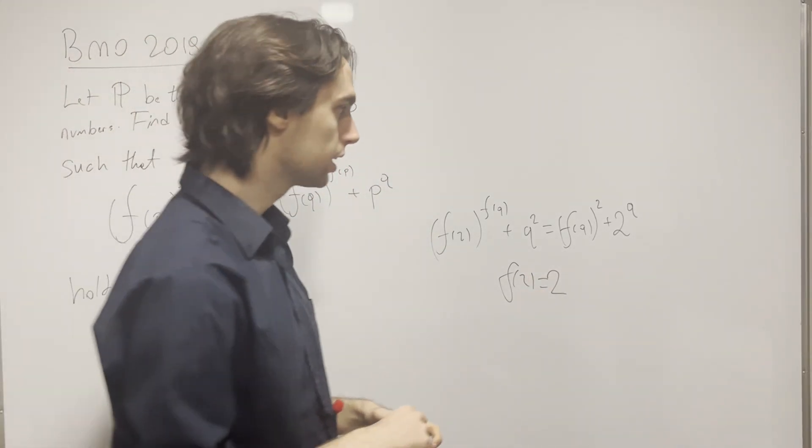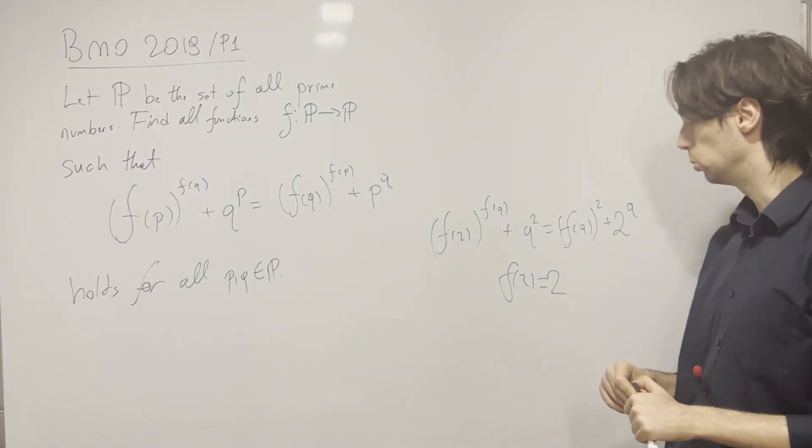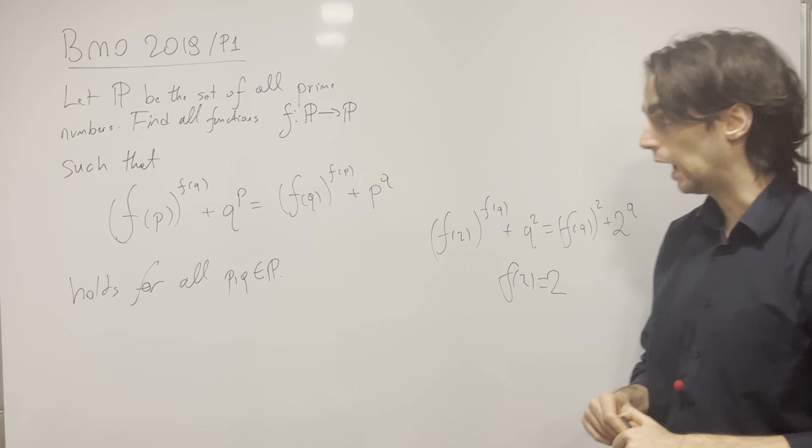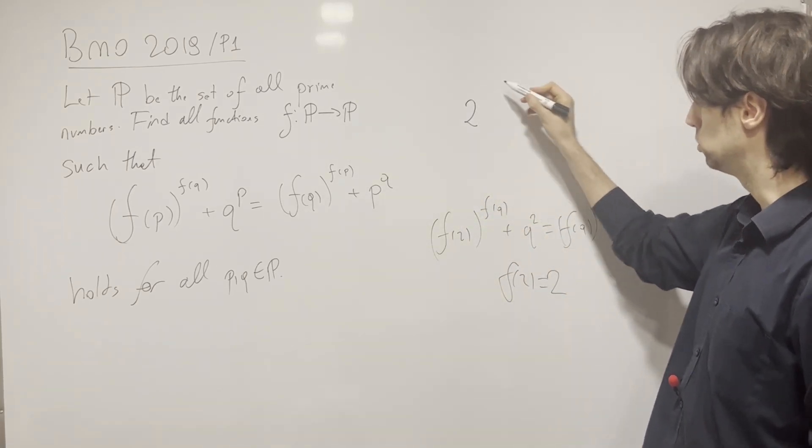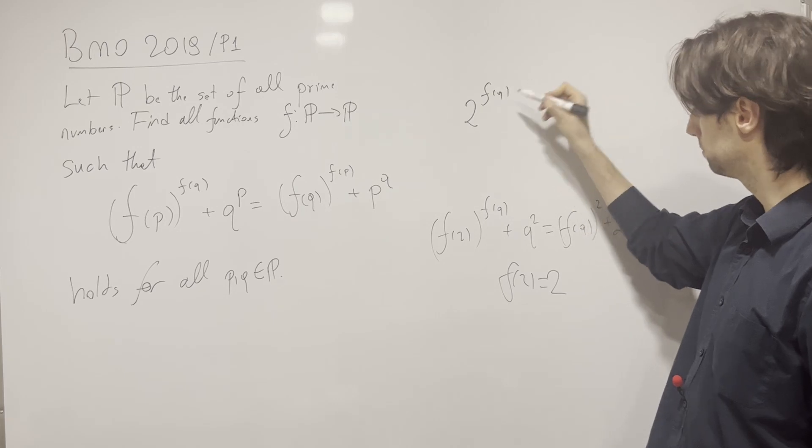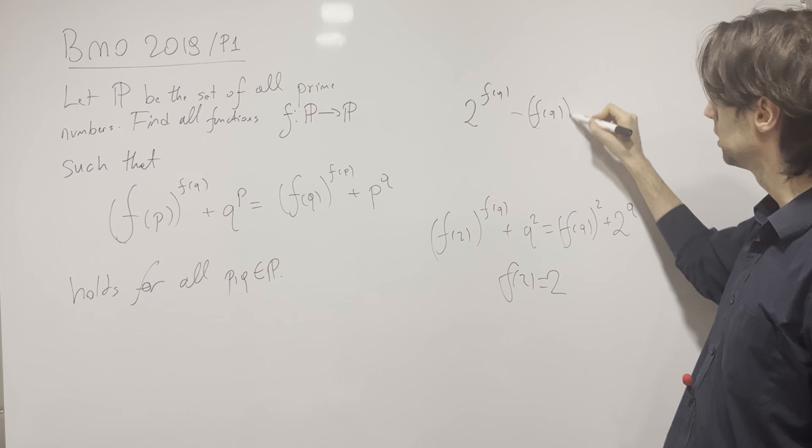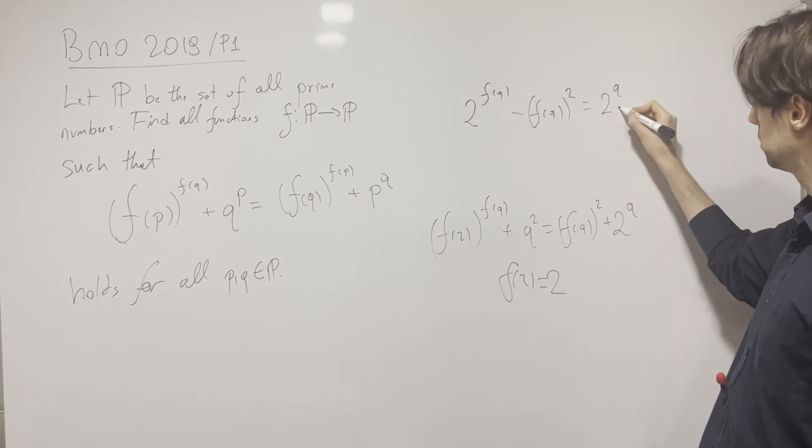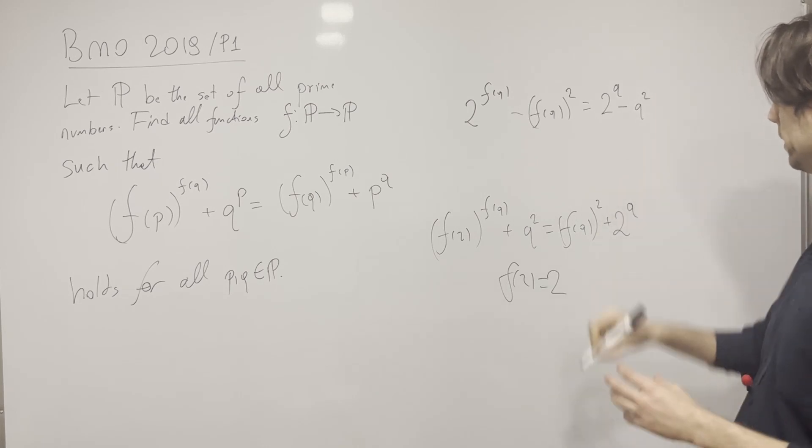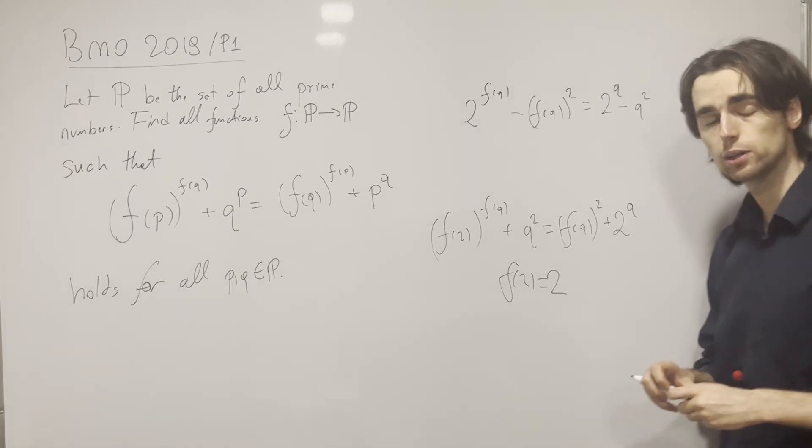Now we have f(2), and this whole thing actually now becomes 2^(f(q)) - f(q)^2 = 2^q - q^2. It's just a different way of rewriting this.